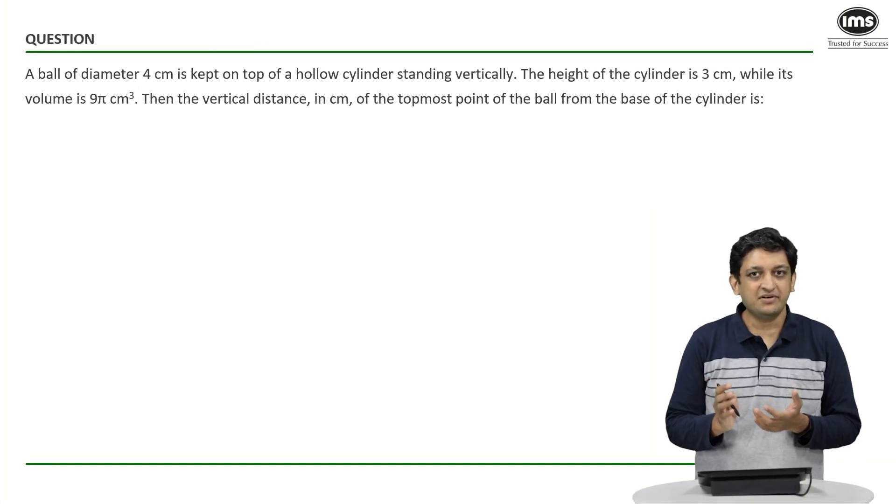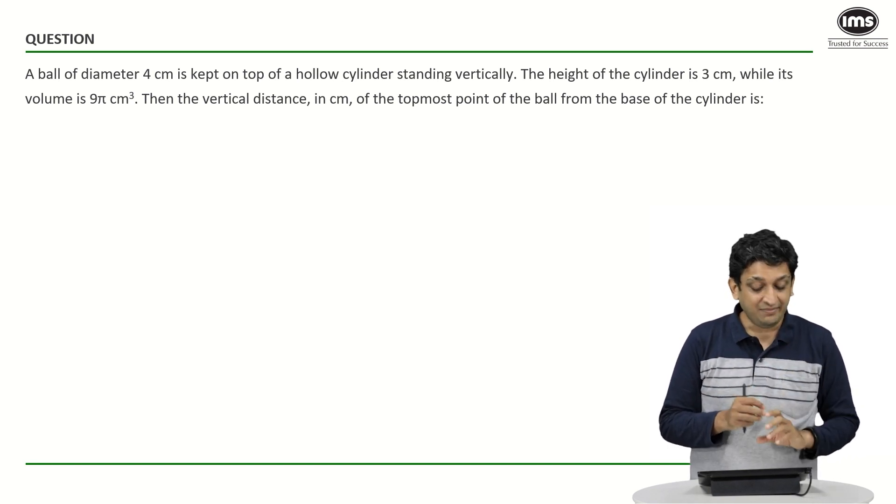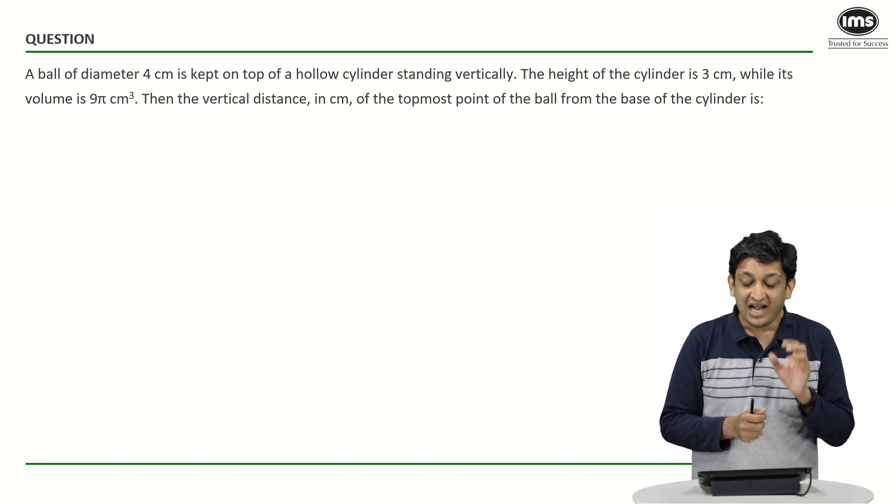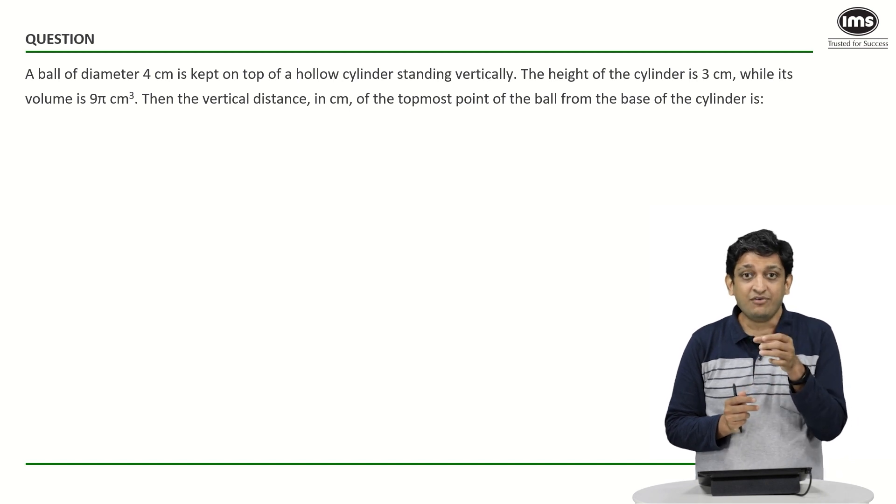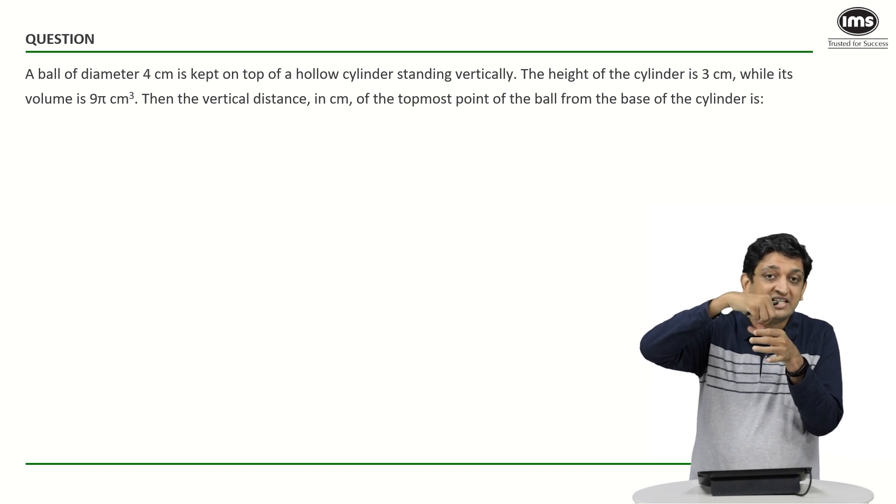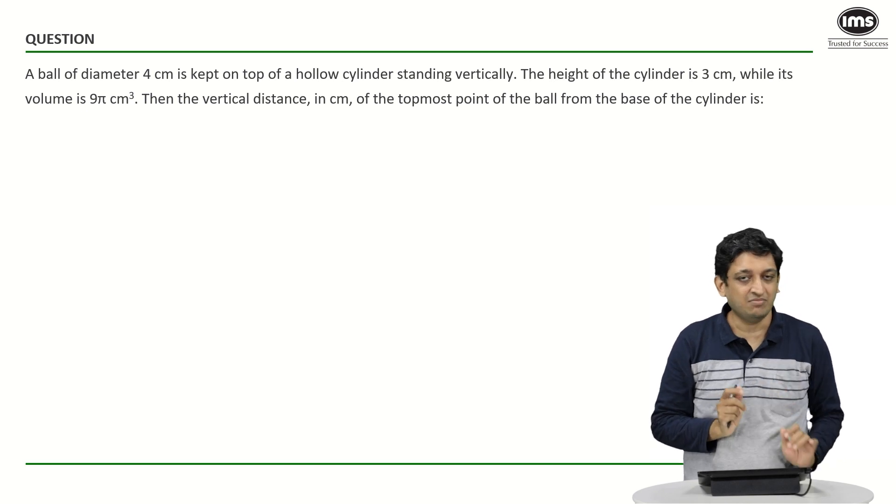Now this is a rather interesting question because it requires you to visualize a bit. What we have here is a ball of diameter 4 centimeter which means that the radius of the ball is 2 centimeter and you also have a hollow cylinder that is present which basically means that if you have a hollow cylinder and you're putting a ball on top of it, some part of the sphere will go inside of the cylinder and that is basically something that makes this question slightly complicated.